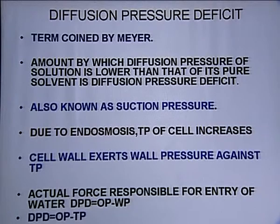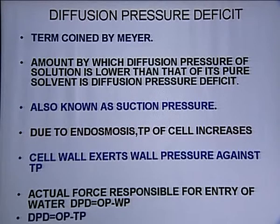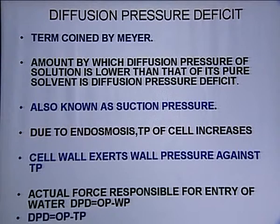So due to endosmosis, when water starts entering the cell, turgur pressure develops. As the cell absorbs water it swells up, and turgur pressure increases. It pushes outward on the cell wall, and the cell wall exerts equal and opposite pressure against turgur pressure — that is wall pressure. So turgur pressure is always equal to wall pressure.